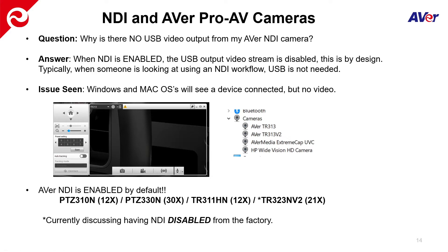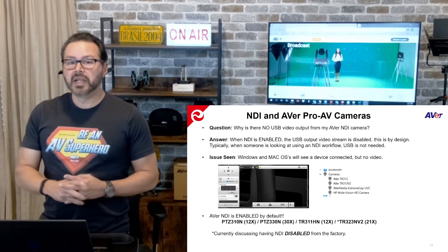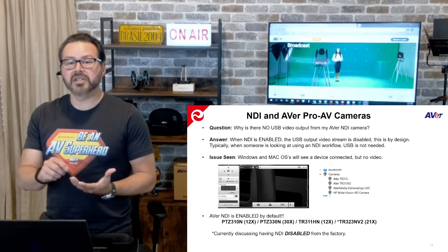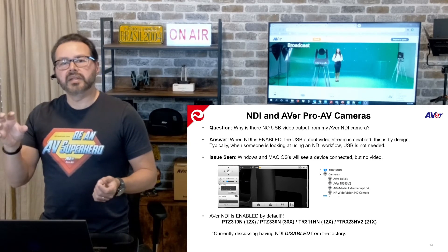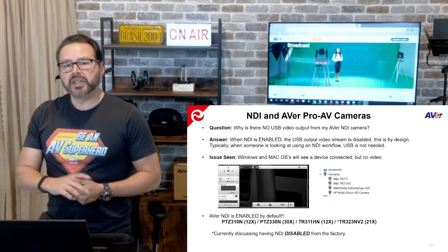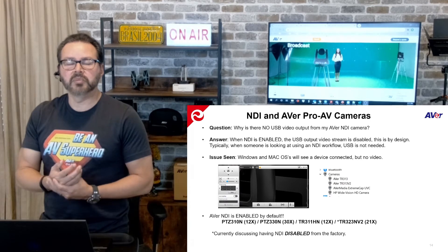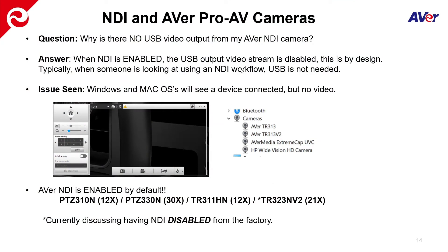In today's video, we're going to address why there is no USB video output from an Aver NDI camera — a question we get asked a lot. When you purchase an NDI camera, the first thing you'll want to do is put it on the network. But there are instances where people just want to take the camera out, see it has a USB output on the back, and connect it to their computer to test auto-tracking and optics. They'll notice they don't see any video output, and they're wondering why. The reason is that when NDI is enabled, the USB output video stream is disabled — and this is by design.